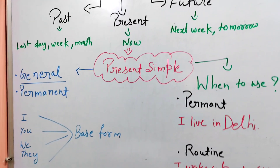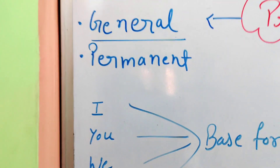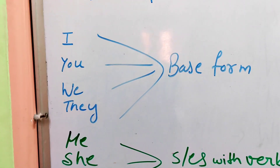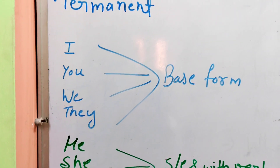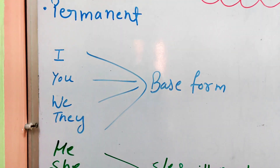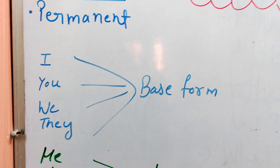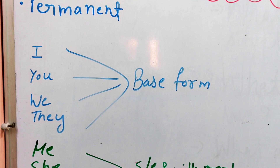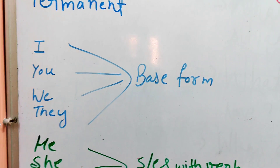We will start with Present Simple. Present Simple is about general or permanent situations. With plural subjects — I, you, we, they — you use the base form of the verb. Action means jump, sleep, walk — these are actions. So you use the base form.